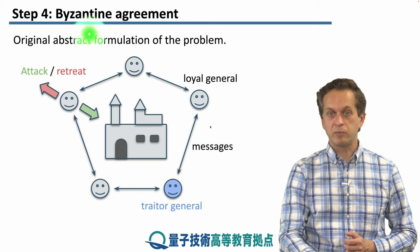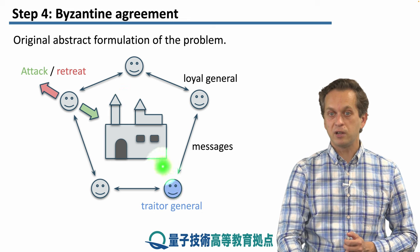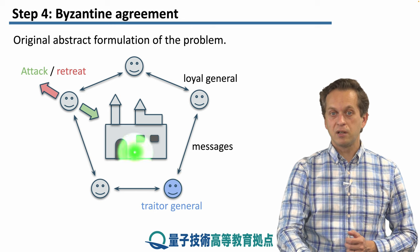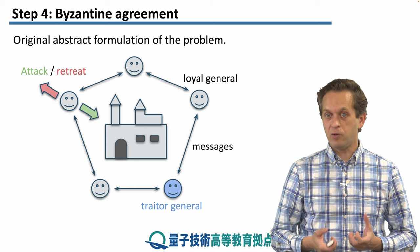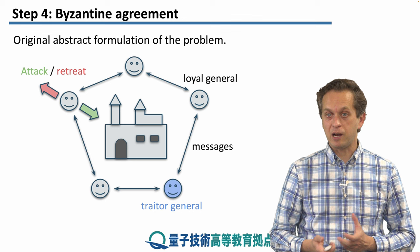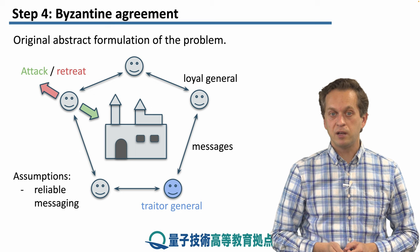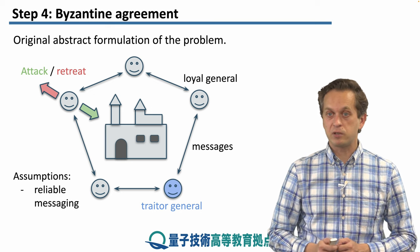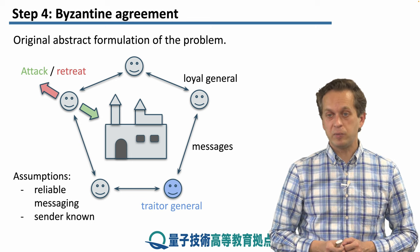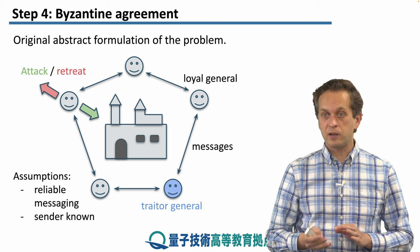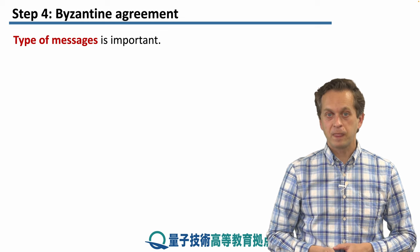Here is a pictorial representation: there is a city and five generals, one of whom is a traitor. They can exchange messages and are trying to make a plan — do we attack or do we retreat? We can only conquer the city if we attack together; if we attack one by one, we will be defeated. The assumptions of the original formulation were that messages were reliable — once sent, they were delivered — that the messages were true, and that the sender was known. The only way the content of a message could be changed was by the traitor general.